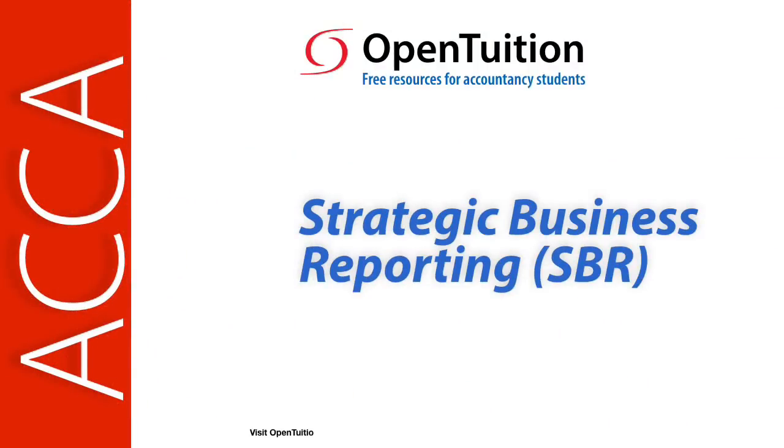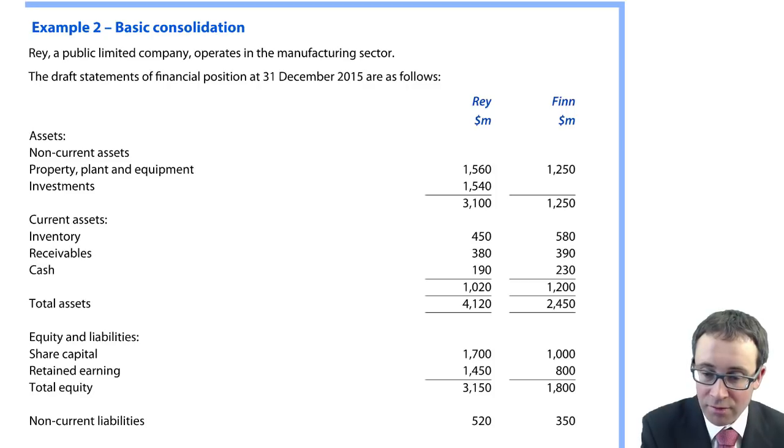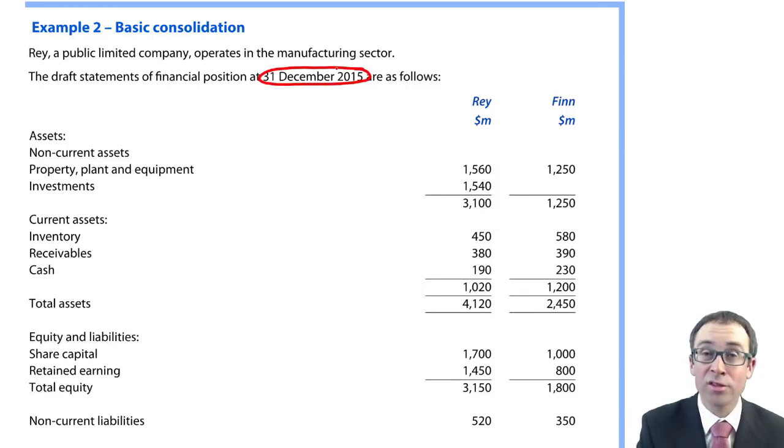This is a lecture from OpenTuition. To benefit from the lecture, you should download the free lecture notes from OpenTuition.com. So let's go through and have a look at the example to do with basic consolidation. The draft financial statements and statement of financial position for December 2015 are as follows.